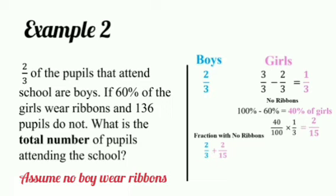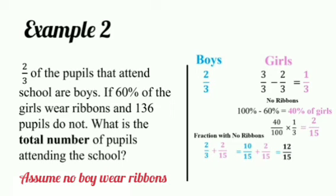This is because we are assuming that no boy wears ribbon. Therefore, the fraction representing the boys that do not wear ribbon and the girls that do not wear ribbon will be the sum total of two-thirds plus two-fifteenths. This would give me ten-fifteenths plus two-fifteenths — remember we changed two-thirds to an equivalent fraction with the denominator of fifteen. When we find the sum of the two, this would give me twelve-fifteenths. So now we have the fraction that represents the pupil population that does not wear ribbons.